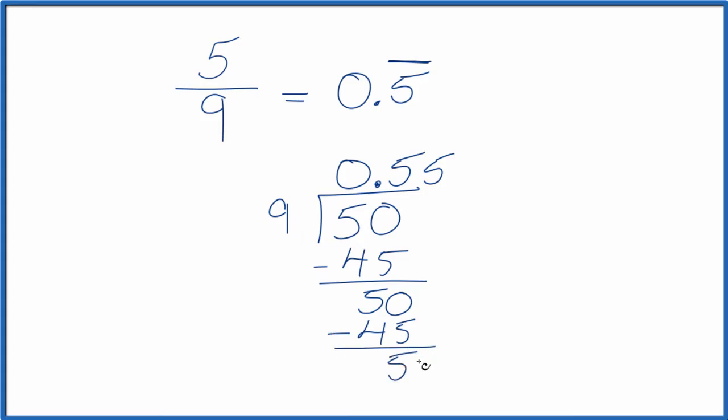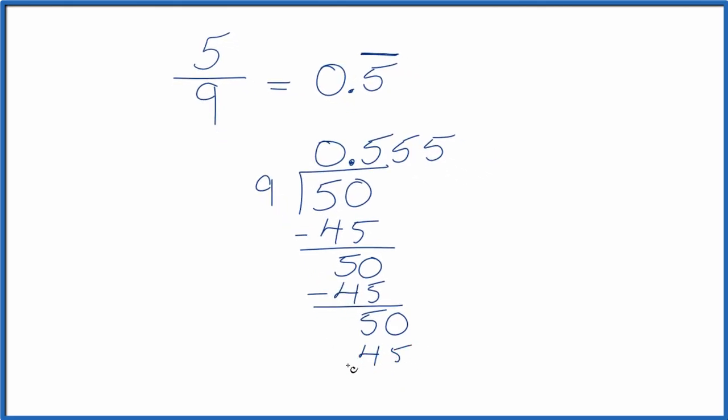Subtract, we get 5. Call it 50, move over one place. 5 times 9 is 45. And you get the idea. It just keeps going. The 5 repeats.